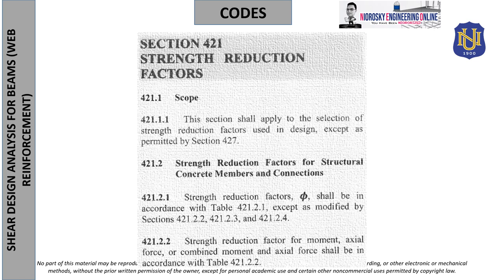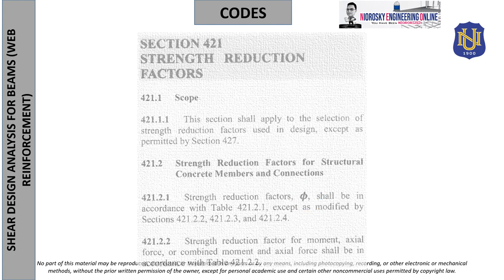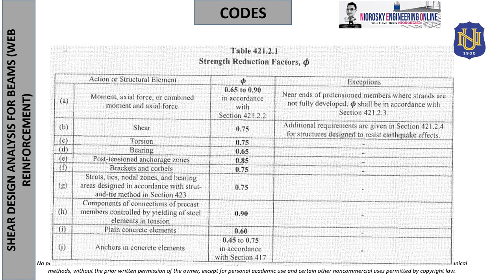The strength reduction factors: for shear, we use φ = 0.75. There is no substitution for this value, but there is an exception — seismic detailing per Section 421.2.4 introduces a term 'at distance to h.' Seismic detailing will be discussed separately to avoid confusion. For the meantime, we use φ = 0.75.